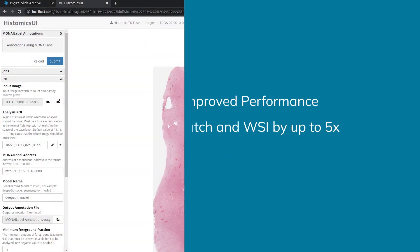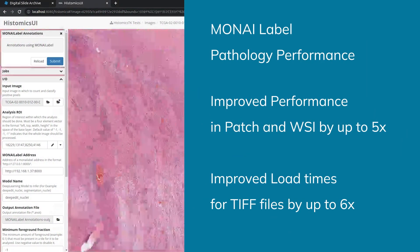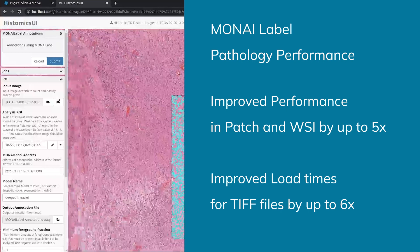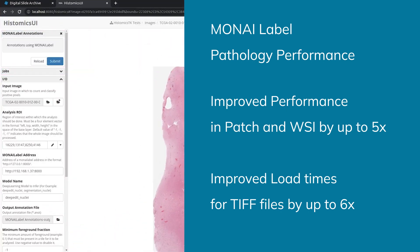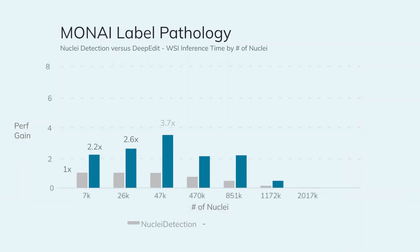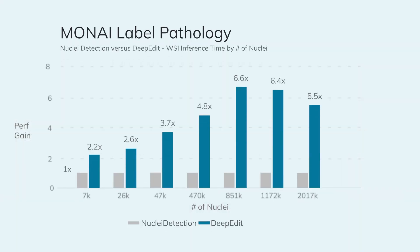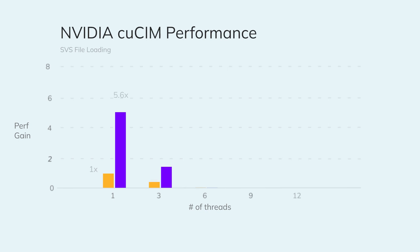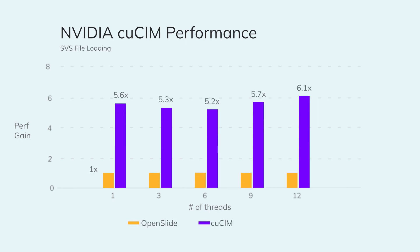Focusing on performance throughout the pathology workflow, MoniLabel has also improved time to inference on patches and whole slide images. It also utilizes NVIDIA cuCIM to help speed up the loading of TIFF files. DeepEdit performs inference up to 5 times faster than the standard Nuclei Detection algorithm, and NVIDIA cuCIM loads TIFF files up to 6 times faster than OpenSlide.